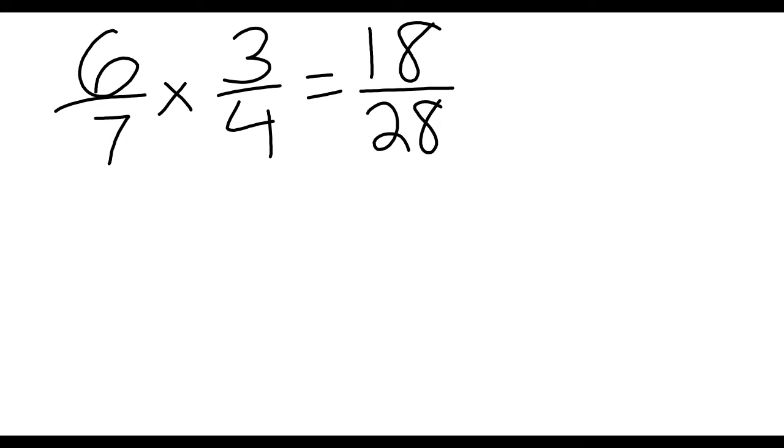The next step is you would see if you can simplify them at all. Both 18 and 28 can be divided by 2. So 18 divided by 2 is 9, and 28 divided by 2 would be 14. So our final answer will be 9 fourteenths.